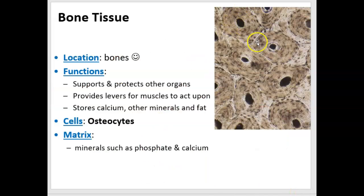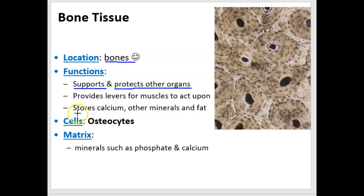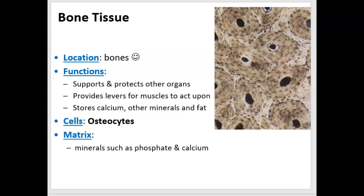Now bone tissue is quite different. It's no surprise where bone tissue is found — that would be in bones. The function of bone is to support or protect other organs. It supports our entire body, giving us a framework for which our muscles can move against. But it also protects organs like the heart and the lungs. It can store calcium and other minerals like phosphate. It can also store adipose — you find adipose tissue in adult long bones, which we'll talk about later in the semester. The cells are called osteocytes. The matrix is where the minerals are stored.